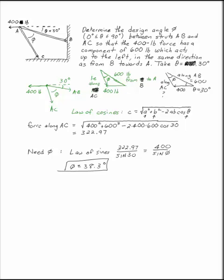And we can say that the force along AC is equal to 400 squared plus 600 squared minus 2 times 400 times 600 times cosine 30. And if you plug that in, you have 322.97.